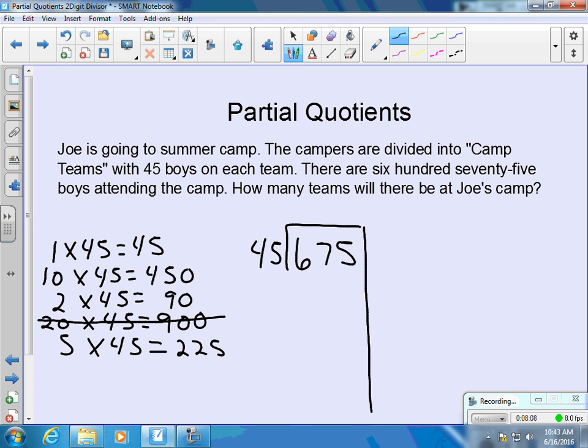So look at our products. Which of the products will get us closest to 675? And we see 10 groups of 45. 10 groups of 45 is 450. So we have 450 boys have been accounted for. So we have 225 boys still to go.